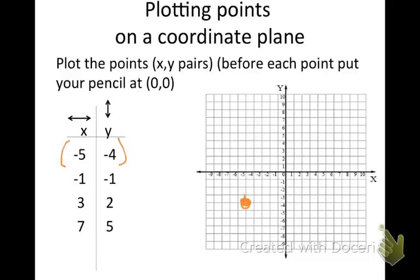The next point is (-1, -1): back to 0, go left 1, down 1 — make a nice big point there. Then (3, 2): starting at 0, go right 3 because it's positive, and up 2 because that's positive — make a big point there. And lastly, (7, 5): from 0, go right 7, then up 5. I'll zoom in so I can see — make a nice big point there.